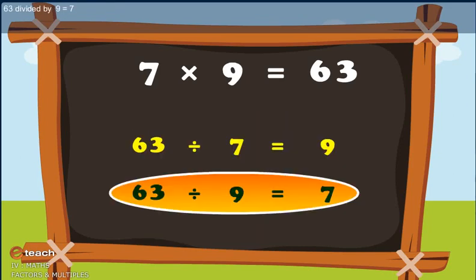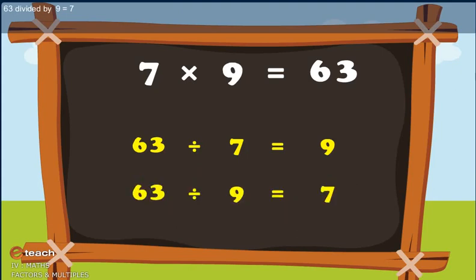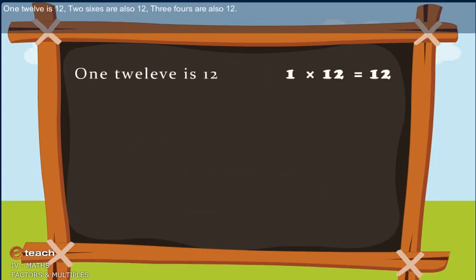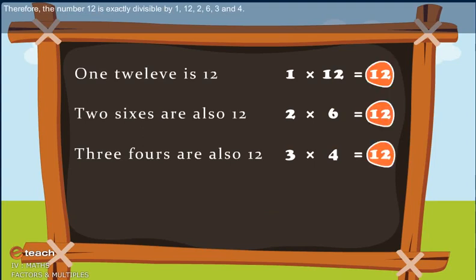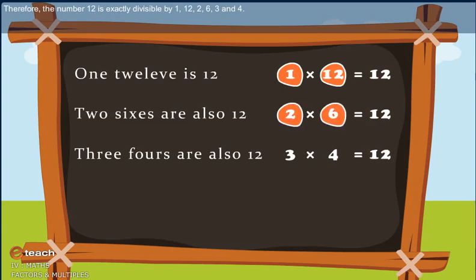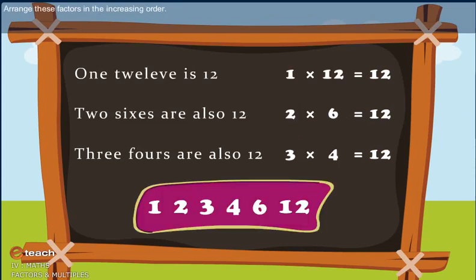63 divided by 9 equals 7. For example: 1 times 12 is 12; 2 times 6 is also 12; 3 times 4 is also 12. Therefore the number 12 is exactly divisible by 1, 12, 2, 6, 3, and 4. Arranging these factors in increasing order, these are all the possible factors of 12.